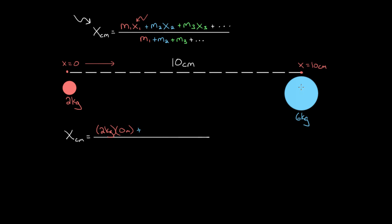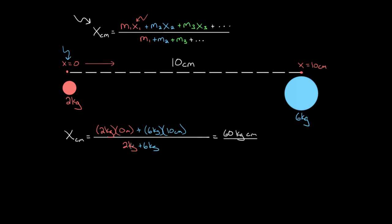If this is x equals zero, the position of mass one is zero meters, so that term just goes away. We add m2, which is six kilograms, times the position of m2. We already chose the left as x equals zero, so we have to be consistent — that means this position has to be 10 centimeters. Those are our only two masses, so we divide by all the masses added together: two kilograms plus six kilograms. Two times zero is zero, plus six times 10 is 60 kilogram-centimeters, divided by eight kilograms.